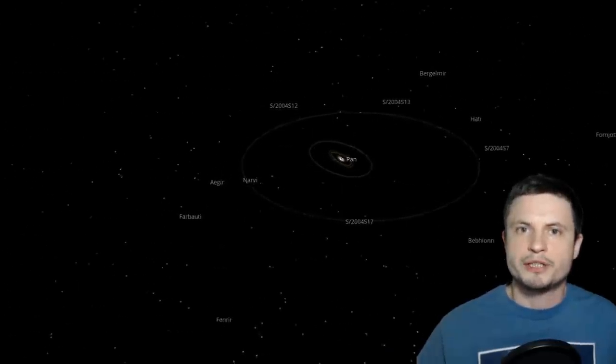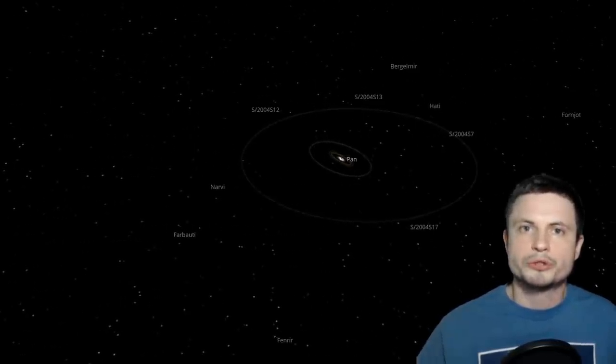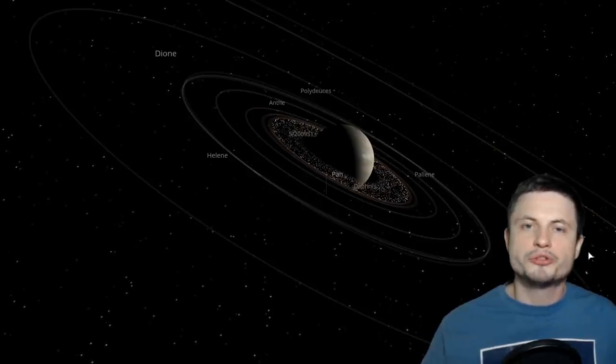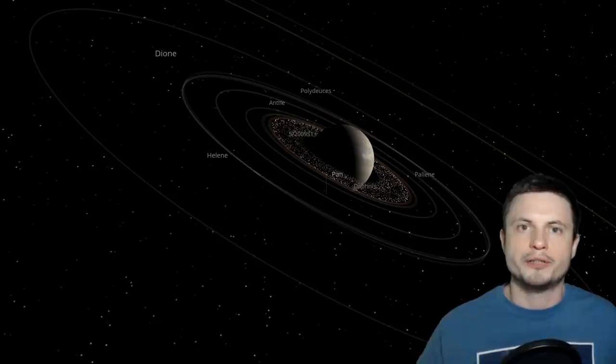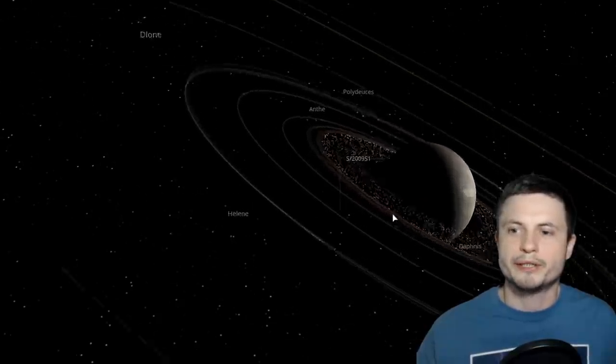Here are some more moons discovered in 2005. All of these were also irregular moons of Saturn. But the most important discoveries were actually done between 2004 and 2009, when the Cassini mission discovered some of the inner moons as well. The most interesting discovery was actually this right here.